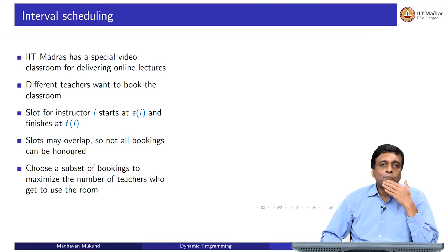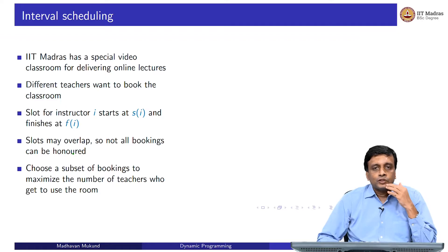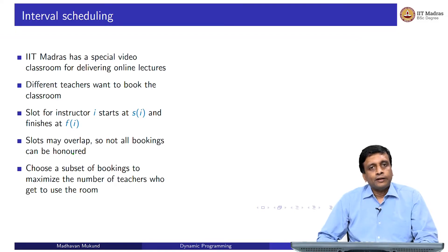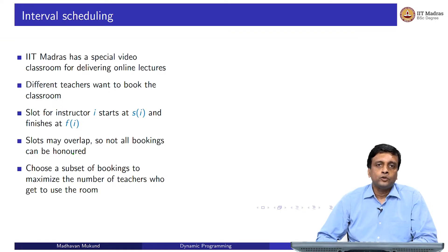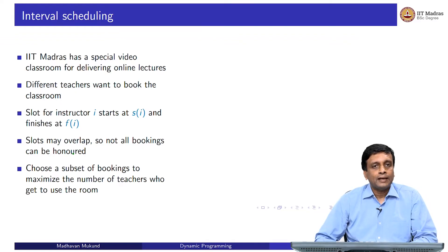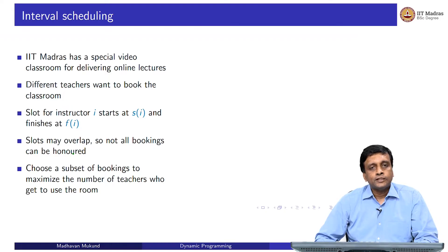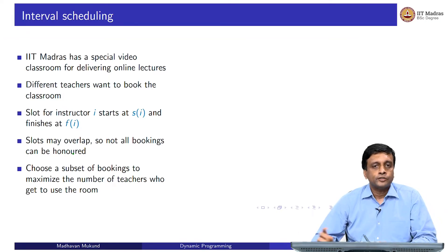Let us look at this sub-problem situation in a different context: the interval scheduling problem. We had a resource — a video classroom — used by a number of faculty members, each with a fixed time slot. Since no two people can use it simultaneously, we choose a subset of slots, and our criterion was to maximize the number of people satisfied — choosing a subset of bookings so the number of teachers who got their booking was maximized, not worrying about room utilization in hours.